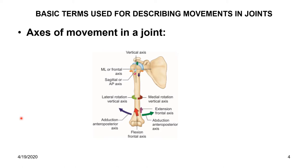Let me re-emphasize the axes of movements. The three axes of movements are: the sagittal or anteroposterior axis, the medial-lateral or frontal axis, and the vertical axis. The movements that take place in the sagittal or anteroposterior axis are abduction and adduction.